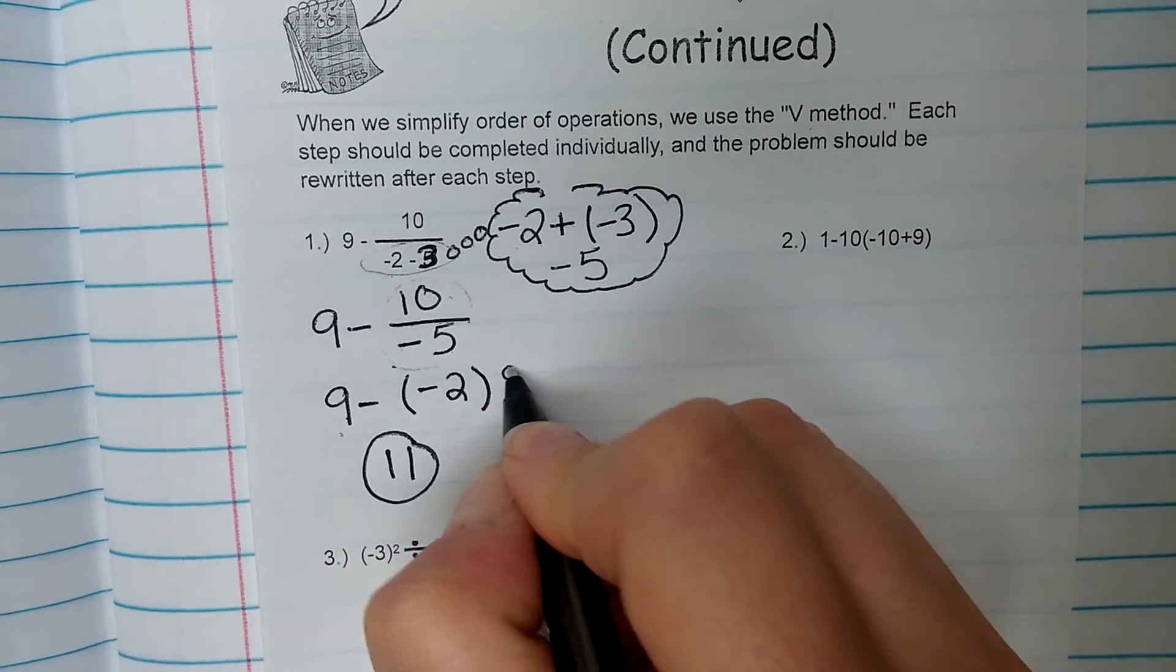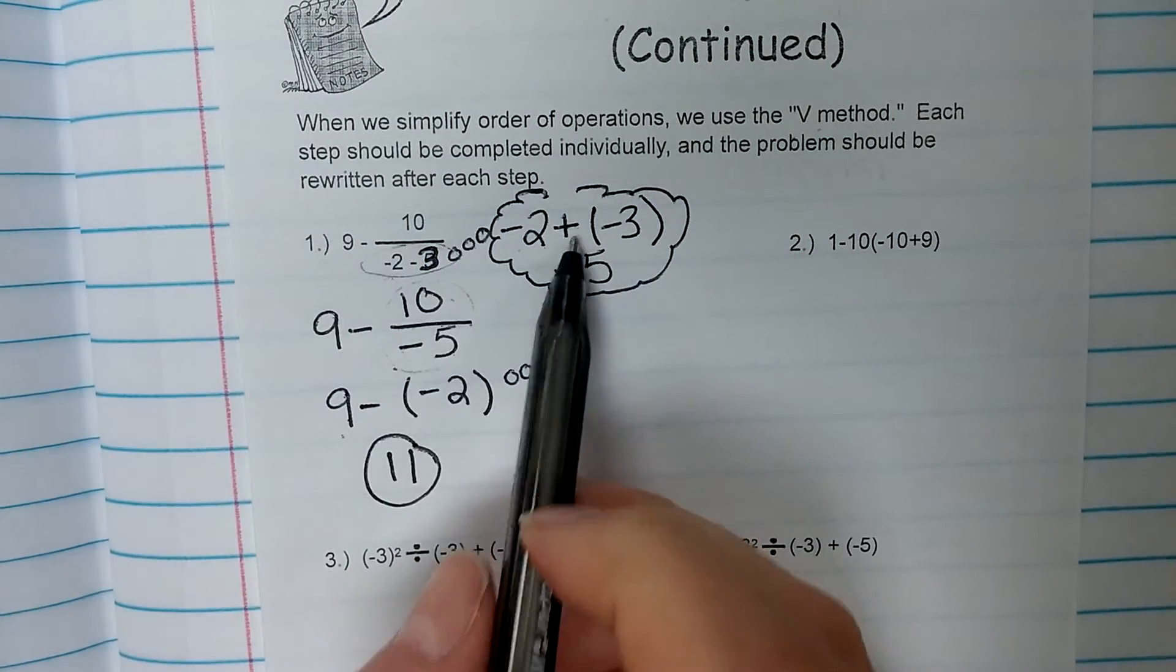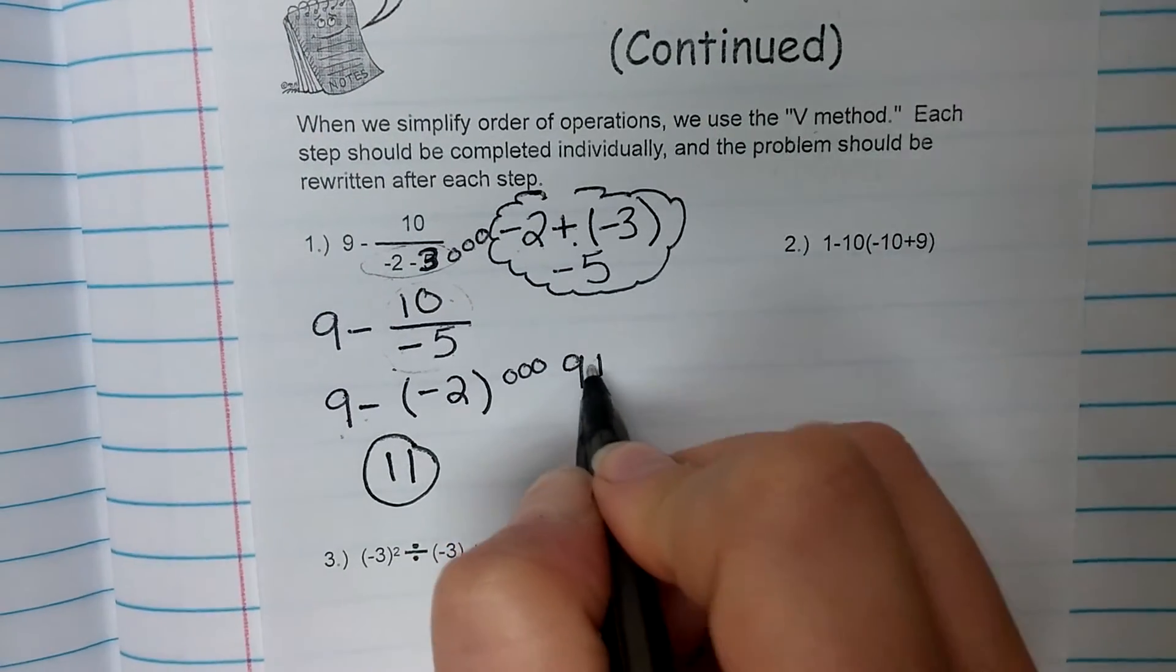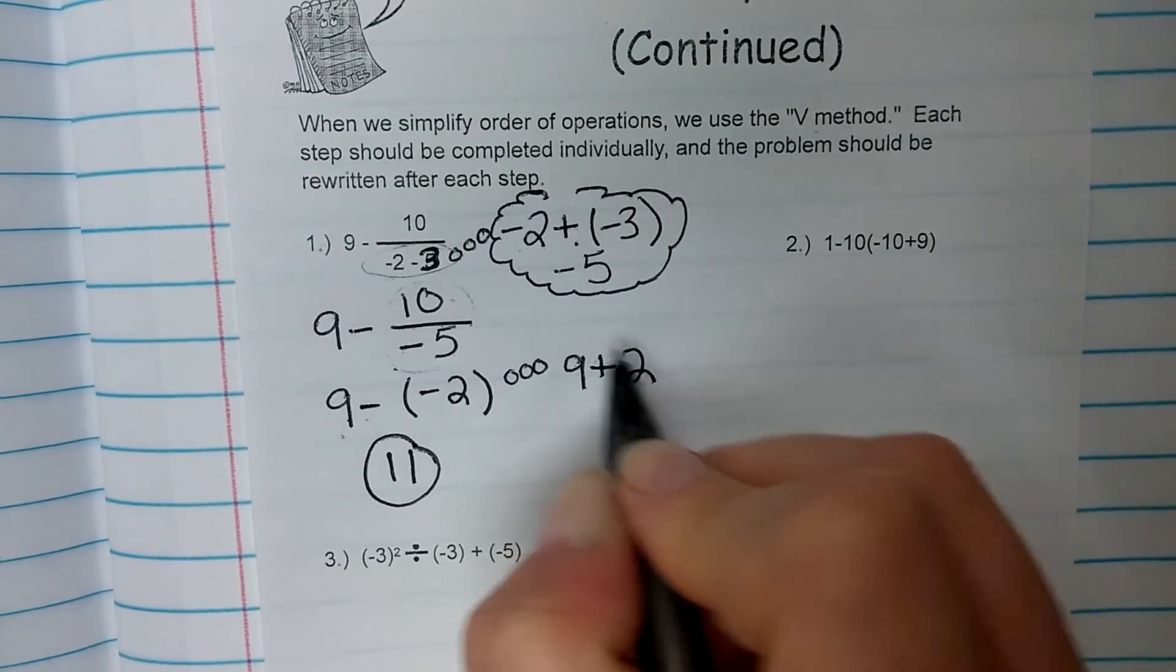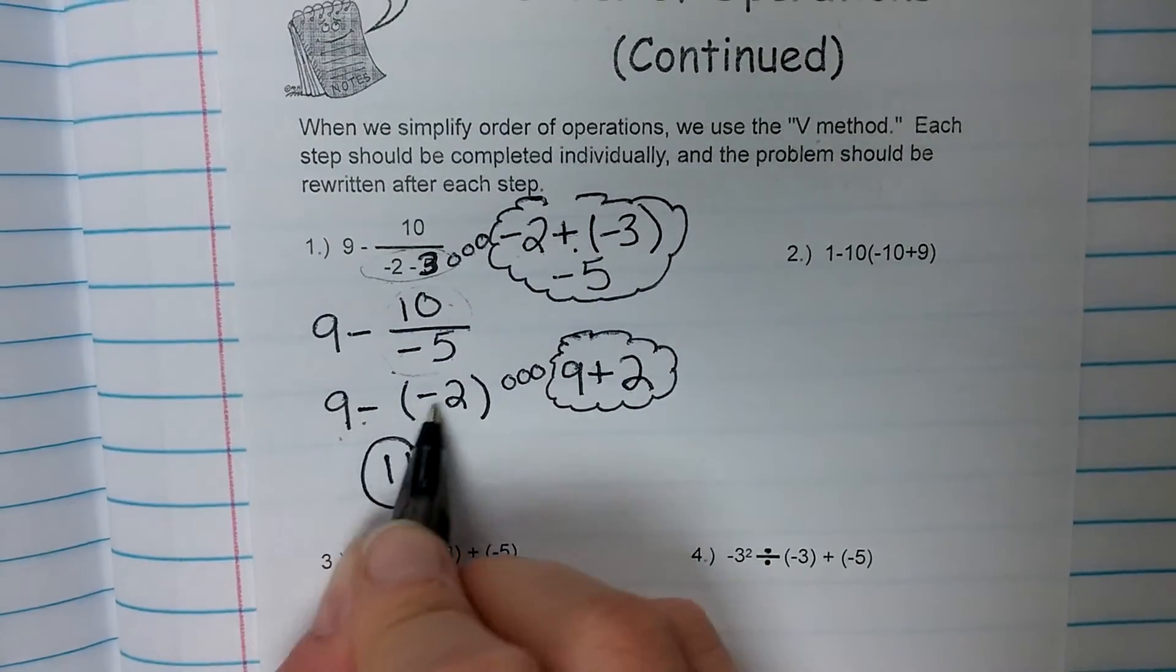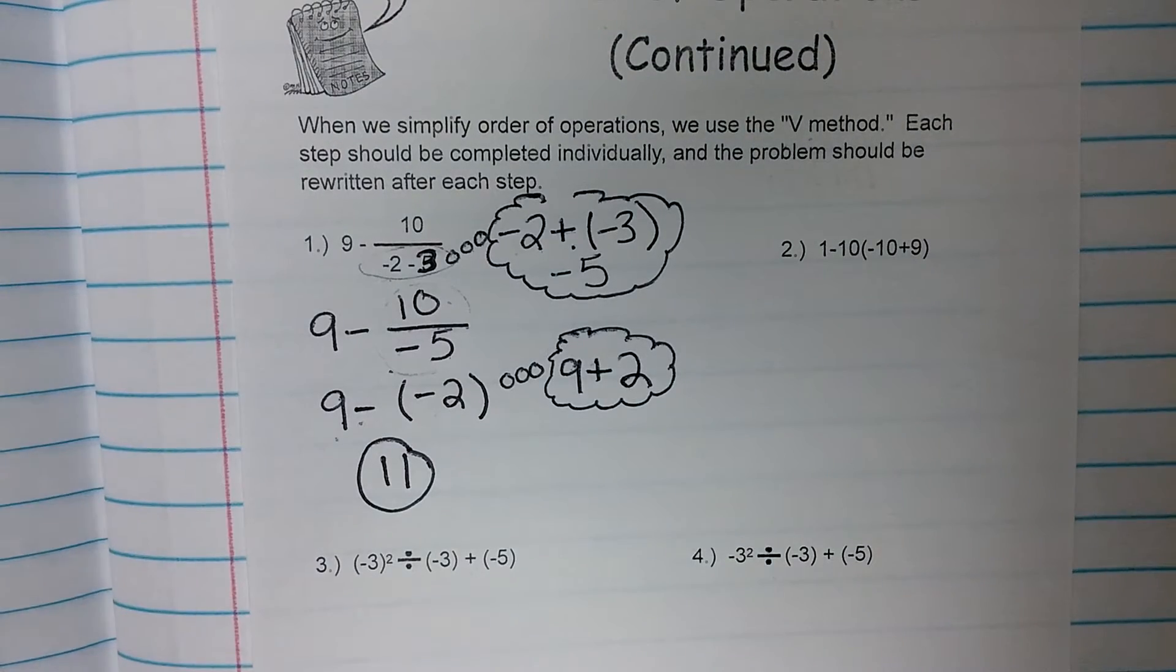And then 9 minus negative 2 gives us 11. And again, if you needed to think about this, we can do the same thing we did up here. We keep the first integer the same, we change the minus to a plus, and we take the opposite of negative 2, which is a positive 2. So that's kind of what you have to think there when you've got the double negative signs.